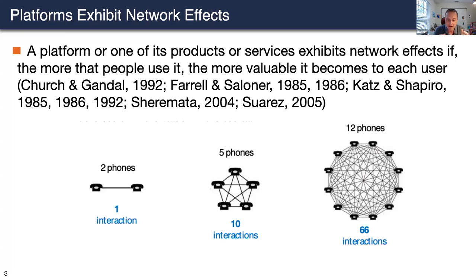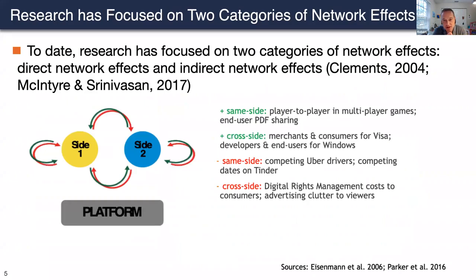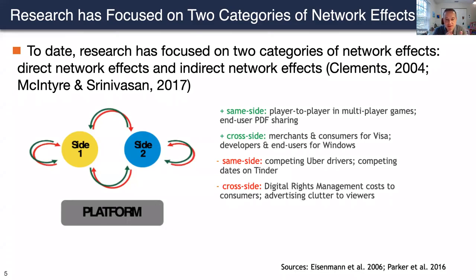Classical examples are the fax machine and the telephone. We know from past literature that network effects make crucial contributions to perceived user value — there is a clear linkage between those two concepts, from vast research across economics, business, and IS. Research so far has focused on two categories: indirect network effects and direct network effects, sometimes also called same-side and cross-side network effects.